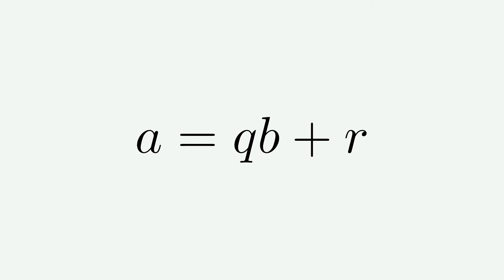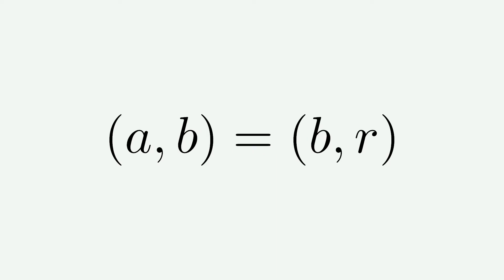Now what's the highest common factor of r and b? Well, from this equation, any factor of r and b must also divide a. So actually the highest common factor of a and b is equal to the highest common factor of b and r.